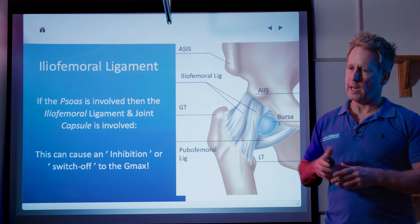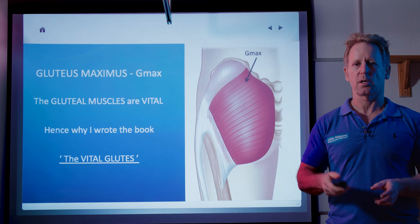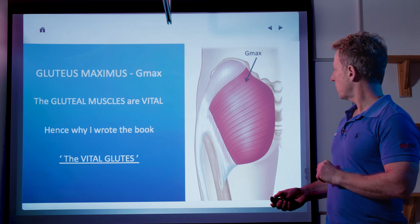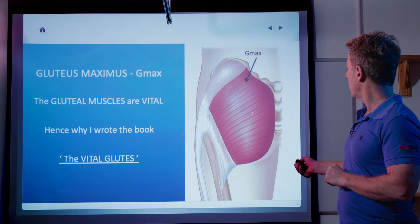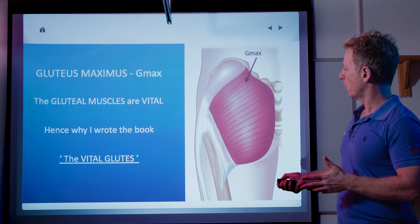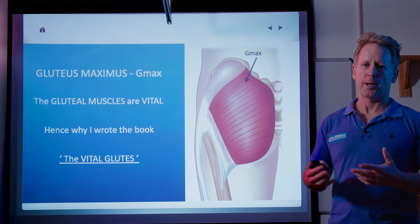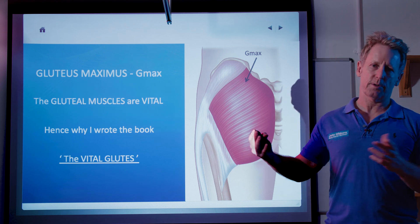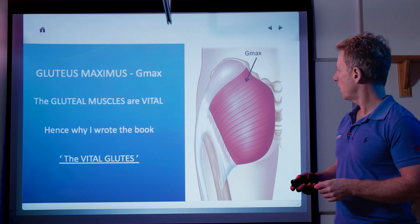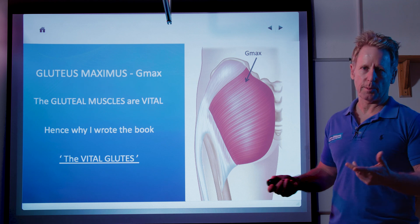If you've got anything wrong anteriorly it can affect the muscle posteriorly — the agonist and the antagonist. In this case we've got the gluteus maximus. I did write a book called The Vital Glutes, so if you're interested in reading more about how it works, feel free to have a read — it's simply called The Vital Glutes and you can buy it on my website or Amazon.